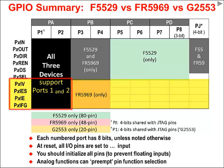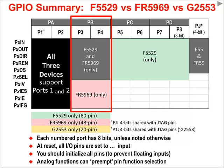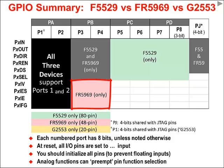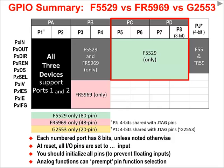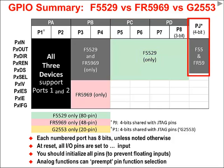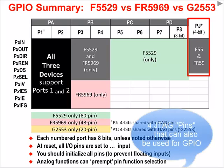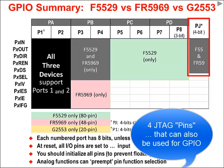Moving to ports 3 and 4: the G2553 doesn't have enough pins, so it lacks those ports. Both the 5529 and FR5969 have ports 3 and 4, but uniquely the FR5969 also supports interrupts on ports 3 and 4 while the 5529 does not. Ports 5 through 8 — where port 8 is just a 3-bit port — are only on the 5529. Finally, port J is a 4-bit port corresponding to the four JTAG bits, and those JTAG pins can be reused for GPIO on the F5529 and FR5969 devices.